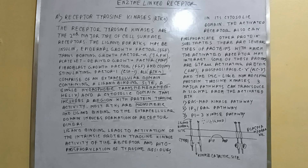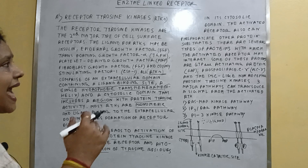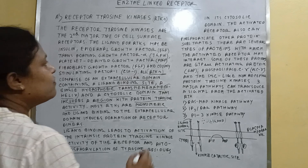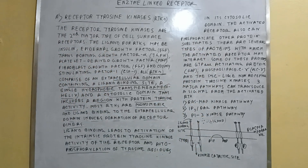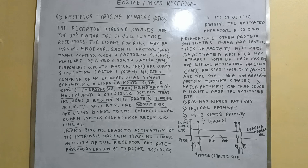Autophosphorylation occurs, but sometimes the activated receptor helps in the phosphorylation of other substances. There are several types of proteins with which the activated receptors may interact. When the receptors become active, they interact with different types of proteins.